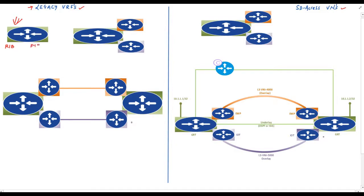The routing information base is actually the control plane of the router, and the forwarding information base is its data plane. When a packet arrives on a particular interface, it is the responsibility of the data plane to forward this packet towards a particular interface based on the forwarding information base. If the router has all the necessary information in its FIB it will forward the packet, otherwise it will consult the control plane or routing information base.